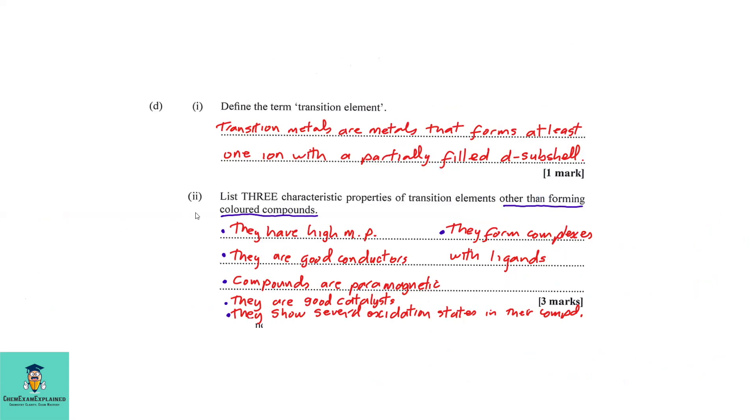D part two: List three characteristic properties of transition elements other than forming colored compounds. One, they have high melting point. Two, they are good conductors. Three, their compounds are paramagnetic, which means that they have magnetic properties. Four, they are good catalysts. Five, they show several oxidation states in their compounds. And finally, six, they form complexes with ligands.